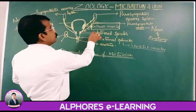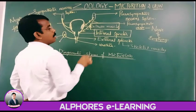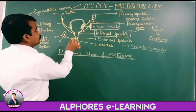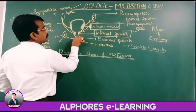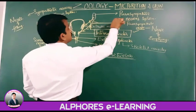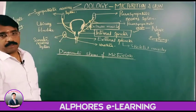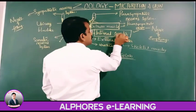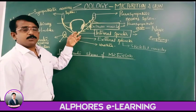Besides that, there are smooth muscles which form the internal sphincter. The internal sphincter is present at the neck of the urinary bladder. The detrusor muscles are smooth muscles, and the internal sphincter is also composed of smooth muscles.